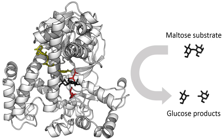A few decades later, when studying the fermentation of sugar to alcohol by yeast, Louis Pasteur concluded that this fermentation was caused by a vital force contained within the yeast cells called 'ferments', which were thought to function only within living organisms. He wrote that 'alcoholic fermentation is an act correlated with the life and organization of the yeast cells, not with the death or putrefaction of the cells'.